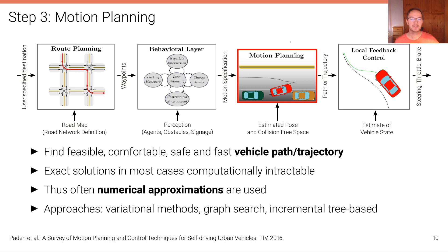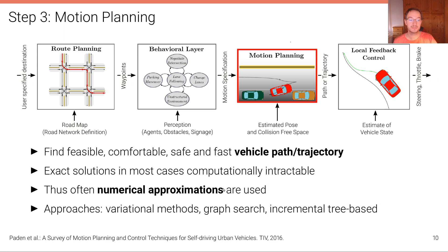The third stage is motion planning, which takes in the motion specification and produces a path or trajectory. The goal is to find a feasible, comfortable, safe, and fast vehicle path or trajectory. Computing an exact solution is in most cases computationally intractable, so numerical approximations are commonly used. Typical approaches include variational methods, graph search methods, and incremental tree-based methods.